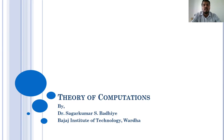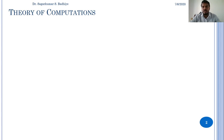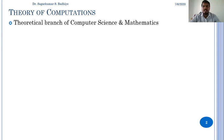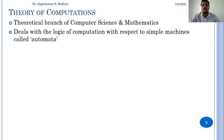The theory of computation is the theoretical branch of computer science and mathematics that deals with the logic of computation with respect to simple machines called automata.